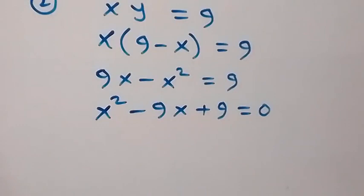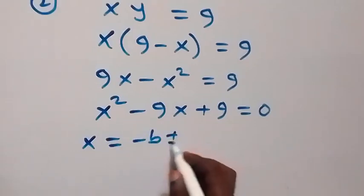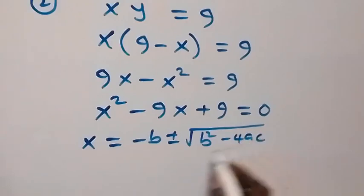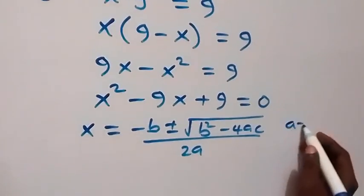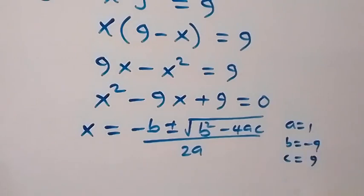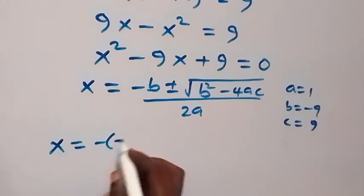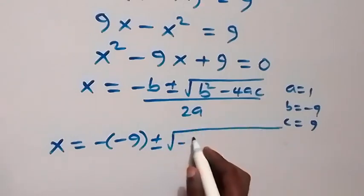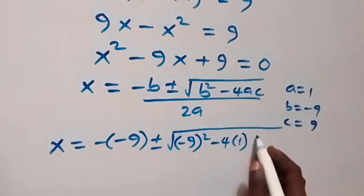What we have here is a quadratic equation, which we can solve using the formula x equals to minus b plus or minus square root of b squared minus 4ac, over 2a. Where a is equal to 1, b is minus 9, and c is 9.